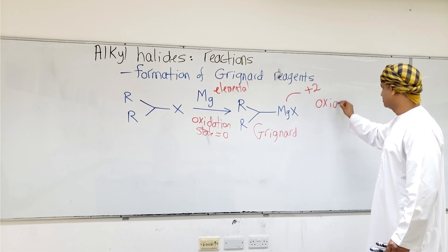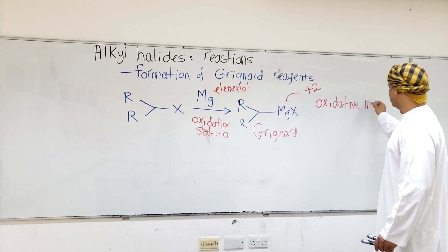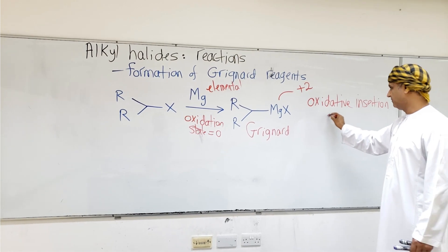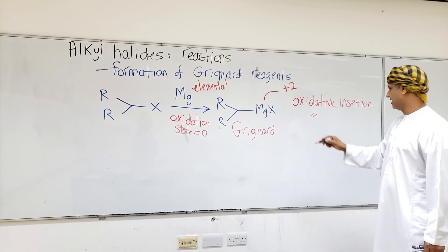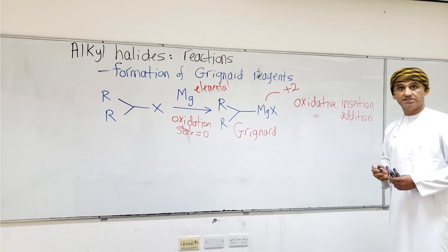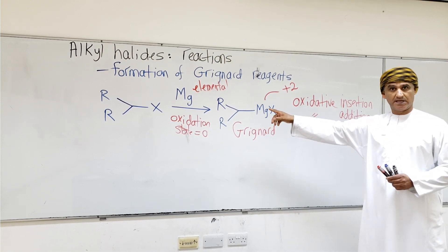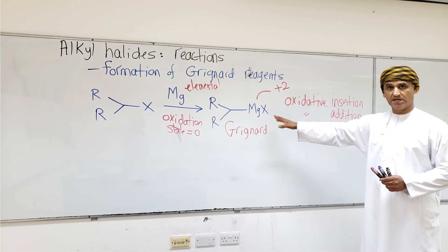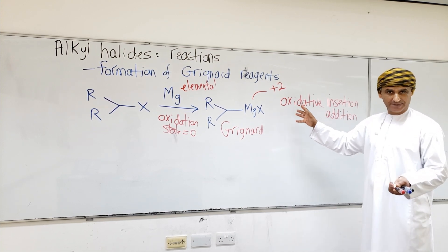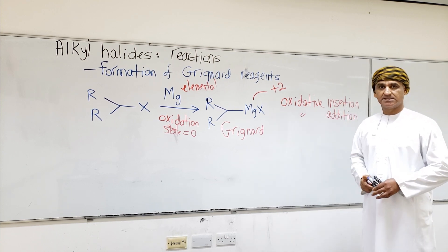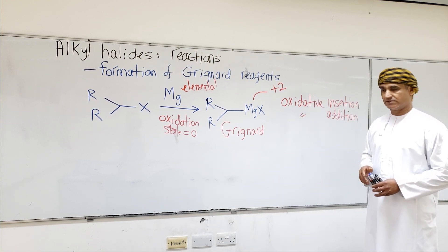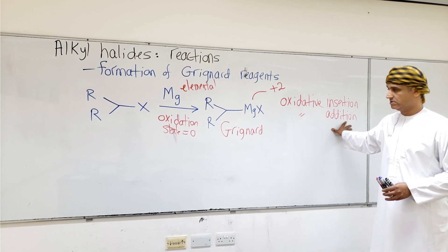Oxidative addition or oxidative insertion are possible descriptions of the Grignard formation reaction from an alkyl halide. The oxidation state of magnesium has increased from zero in the elemental form to plus two in the Grignard reagent. Magnesium has added to the C-X bond, which is why this is called oxidative addition. It is also called oxidative insertion because magnesium has inserted into the C-X bond.